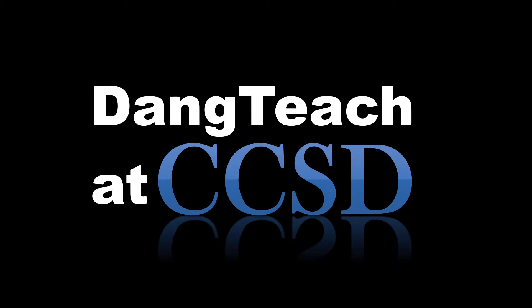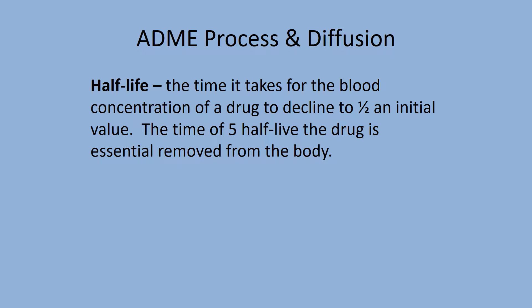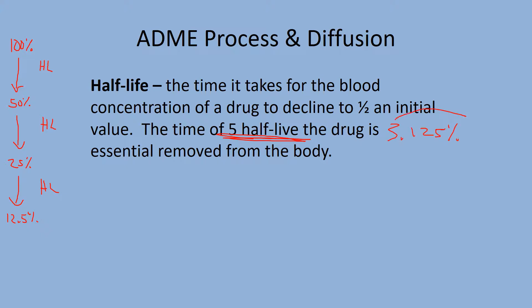Half-life is very similar to radioactive decay — the rate that a drug is eliminated from the body is roughly constant. Half-life is the time it takes for your body to get rid of half of the drug. Starting at 100%, after one half-life you have 50%, then 25%, then 12.5%. After five half-lives you're down to 3.125% — pretty much out of your system for most drugs.